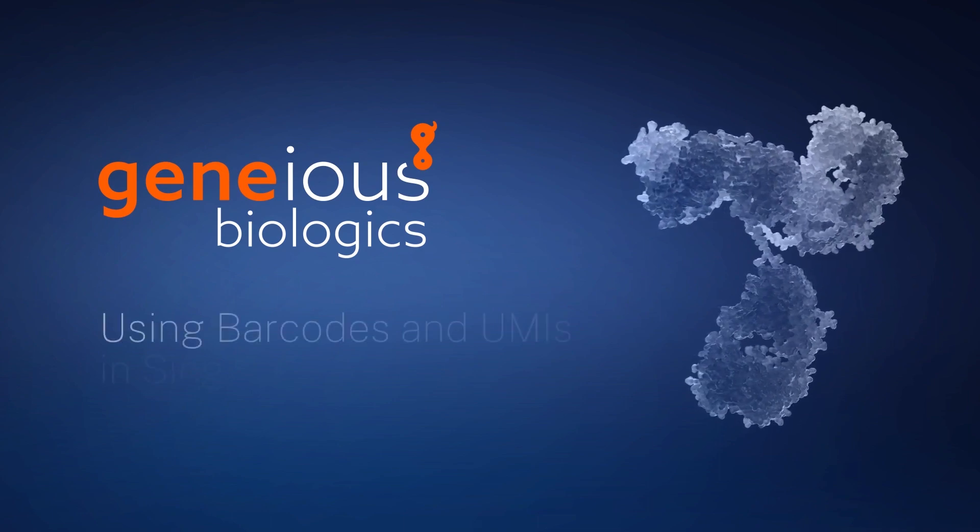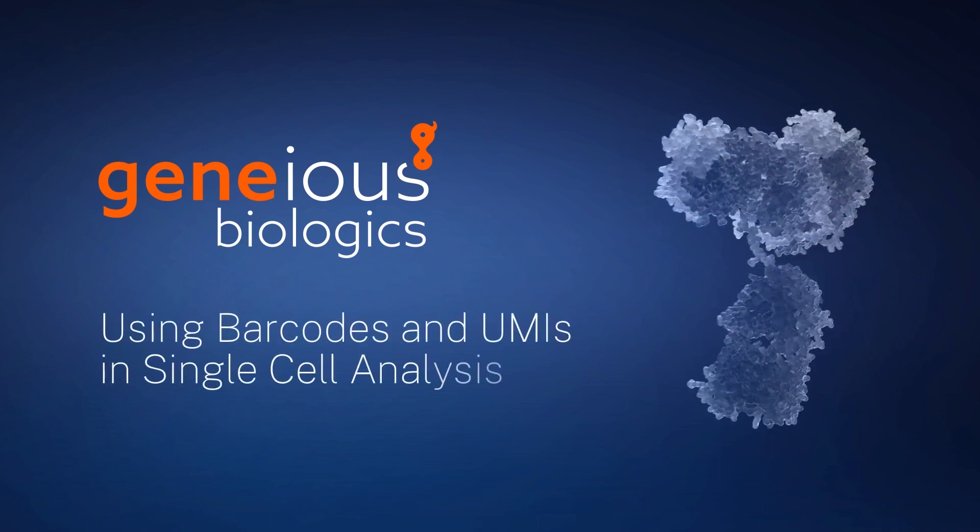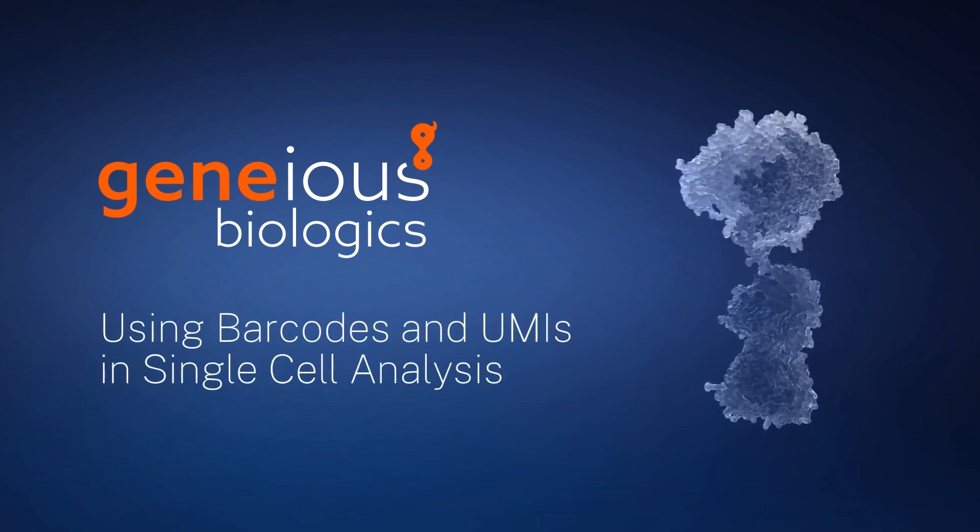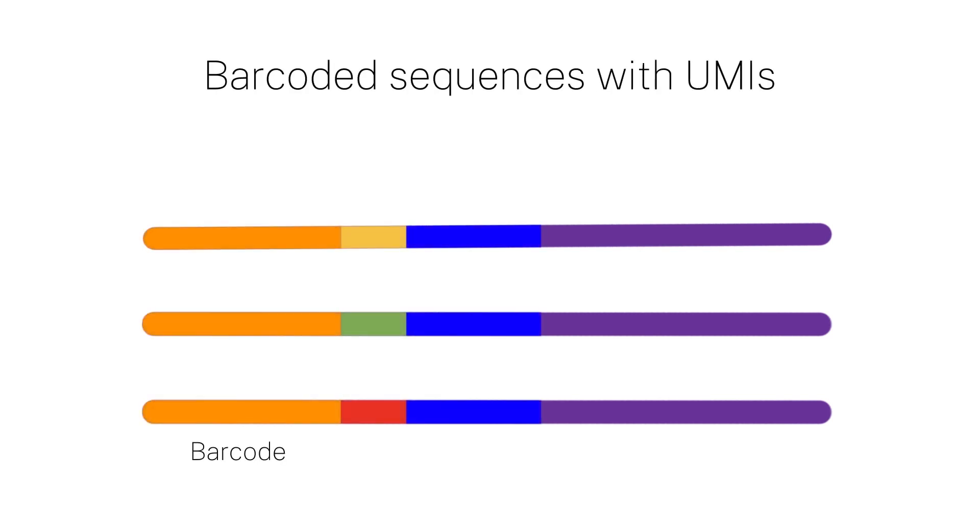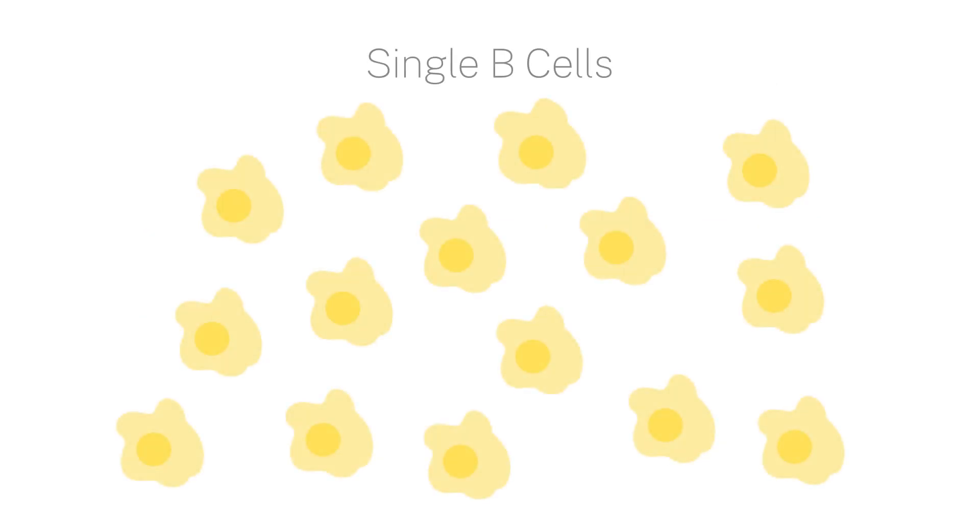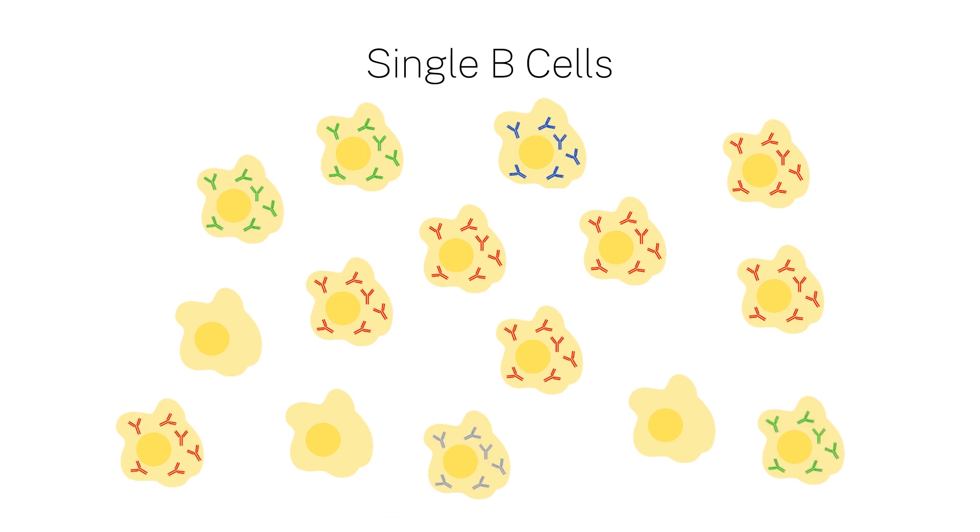Welcome to this Genius Biologics video on barcodes and UMIs and their use in single-cell analysis. Molecular barcodes and UMIs are short nucleotide tags attached to sequences of interest. In single-cell analysis, they allow you to identify the expression profile of individual cells. For antibody discovery, this means you can determine the most highly expressed heavy and light chains from each B cell.